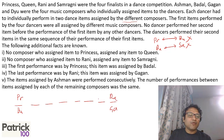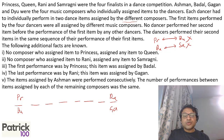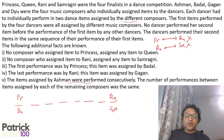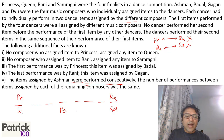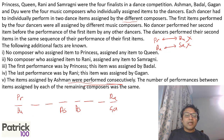So we have first to eighth performance. The items assigned by Ashman were performed consecutively, and the first four dances were by different composers. Since Ashman performed two consecutive performances, the only possibility is that Ashman is fourth and fifth — because the first four dances were all by different composers, Ashman must land on fourth and fifth to be consecutive. That's the only way.